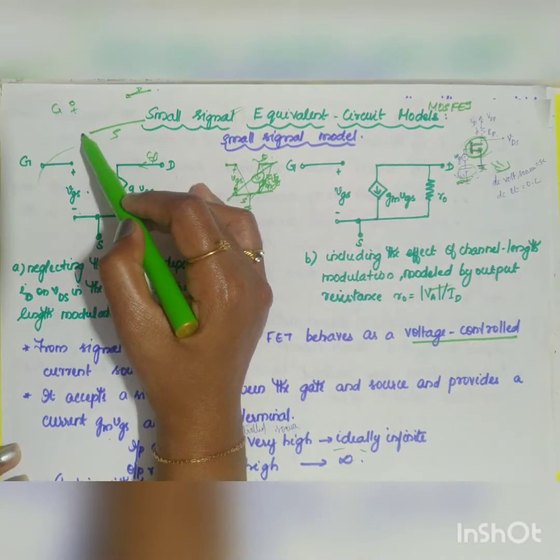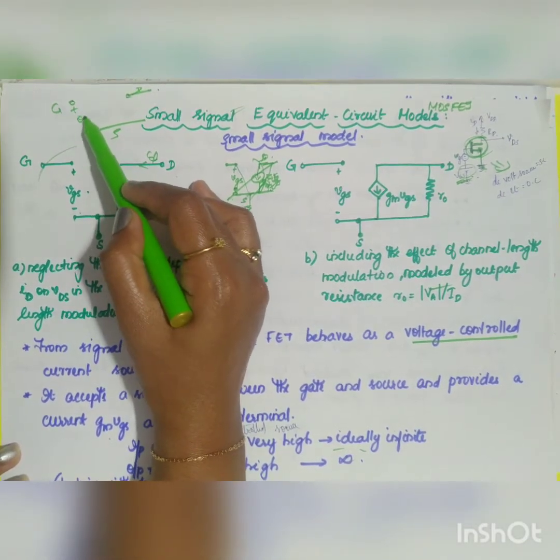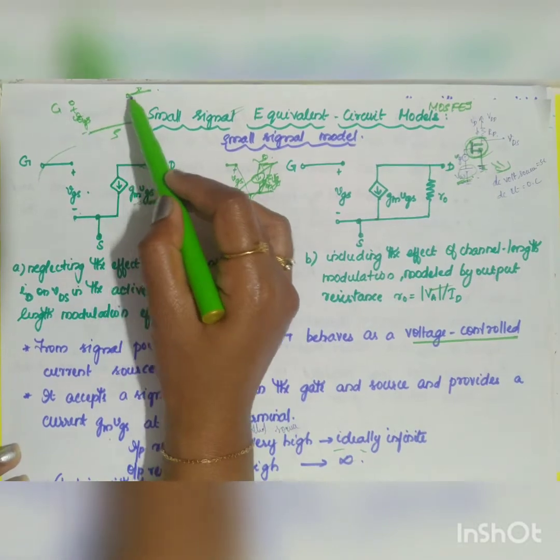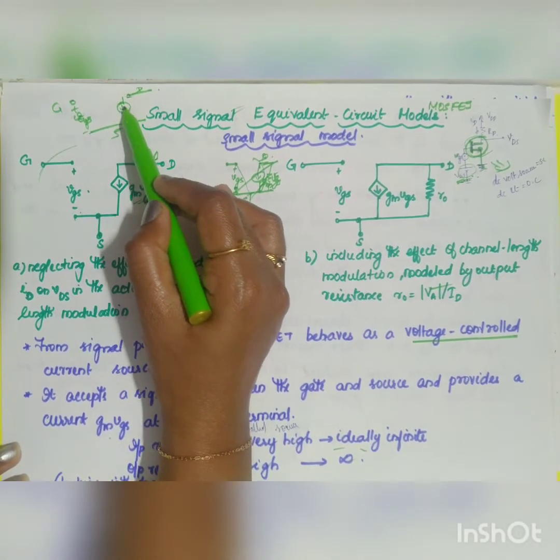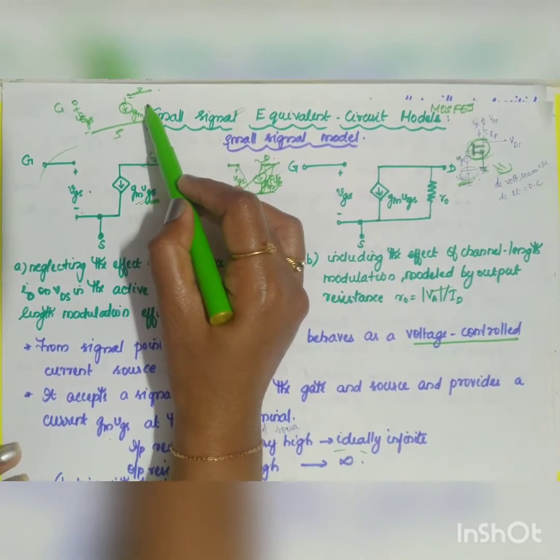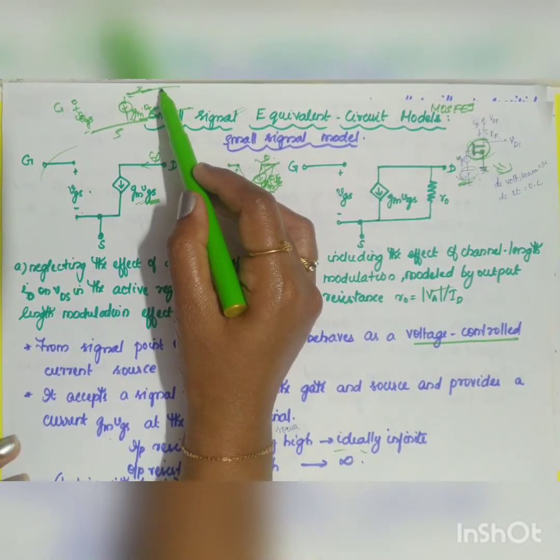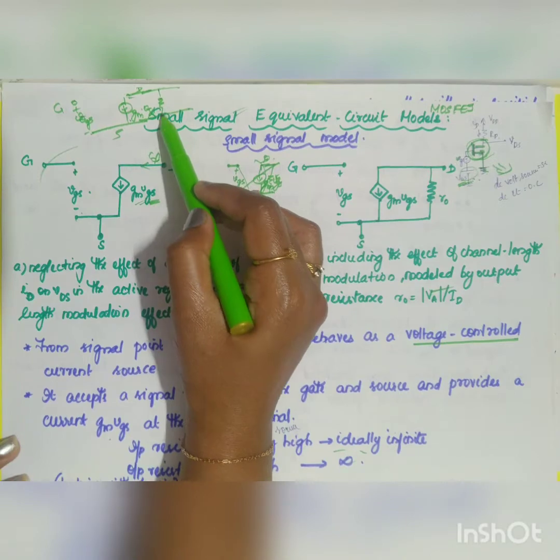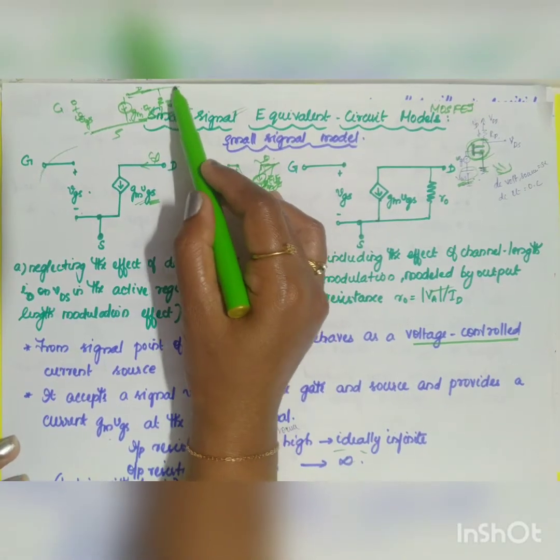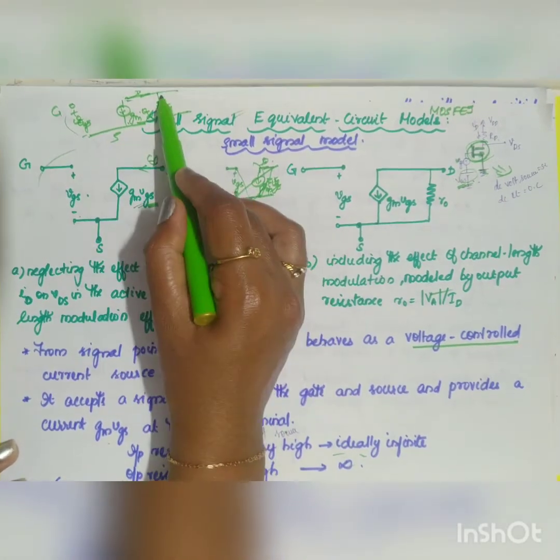Across the gate you have your oxide layer, so you will be open. You will be having your input signal VGS. Output will be converted into your current source GM into VGS. If you take your channel length modulation into account then you will be having your small resistance or R naught. This is going to be your overall diagram.